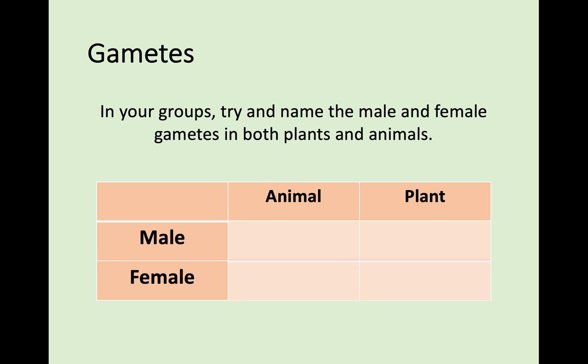First of all, we need to know what these gametes — these sex cells — actually are. In animals, males produce sperm, whereas in plants the male gamete is pollen. They perform the same function but are different things in animals and plants. In females they're a bit more similar: in animals the female gamete is an egg, and in plants the female gamete is an ovule. We'll look at where these are produced later on.